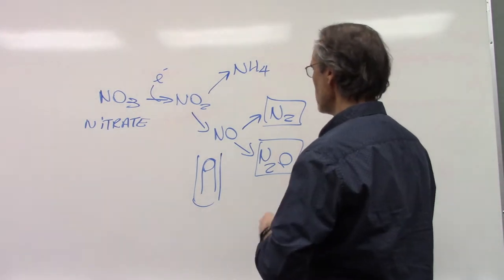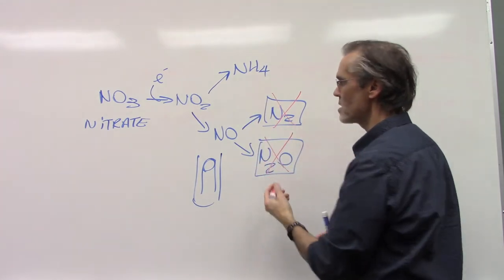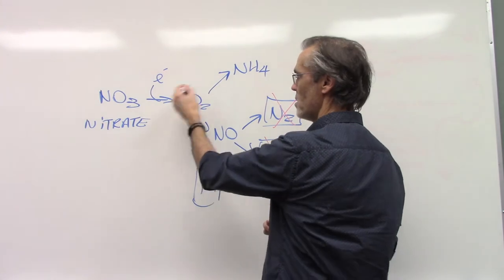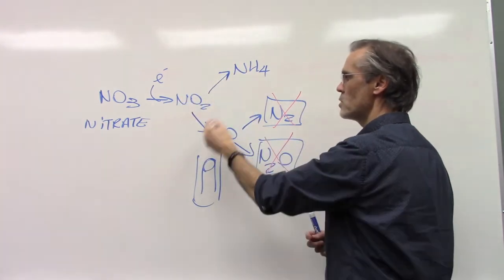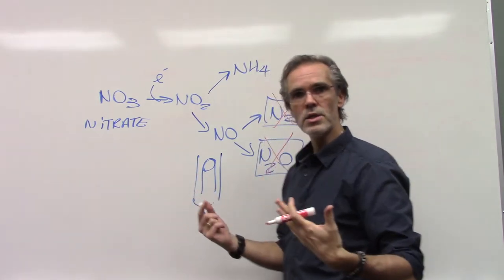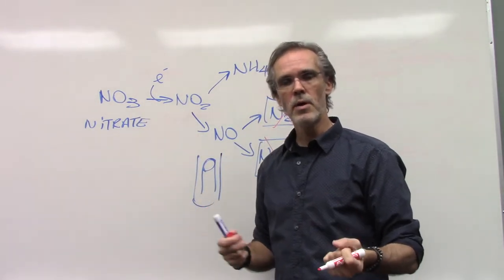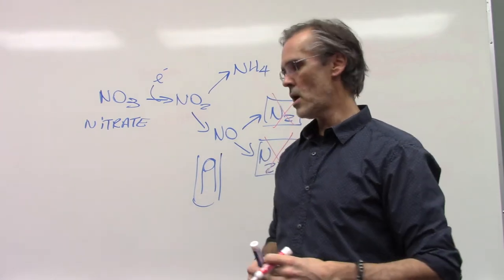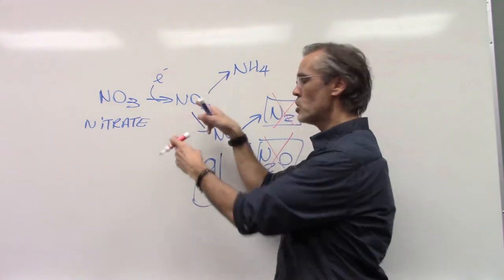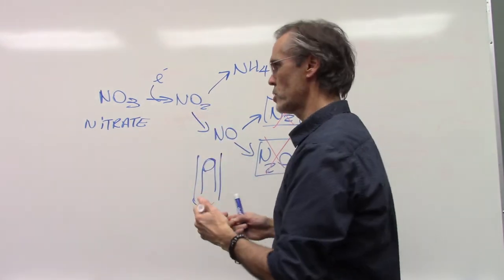If we don't have gas, then we don't know what else we have. Do we have nitrite? Do we have ammonia? Do we have nitric oxide? Or did the reaction not go at all and we're just stuck with nitrate in our tube? We need some kind of chemical reaction to help us understand what's happening.